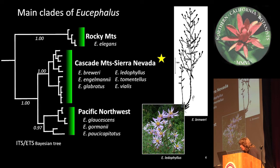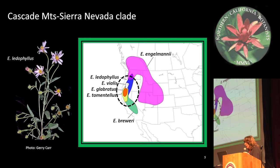Molecular evidence separates this genus into three clades. One of them is just one species, the easternmost species, Eucephalus elegans. Then two groups further west: one with three species in the Pacific Northwest, and the remaining six widespread along the Cascades and Sierra Nevada crest. That's the group I'm going to talk about here.